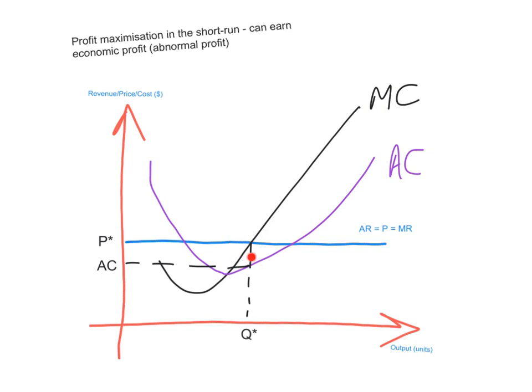From the intersection of MR and MC, you go down until you intersect the average cost curve, which gives you average cost at the profit maximizing level of output. That box between price and average cost, shaded in blue, is the abnormal profit earned by this firm.